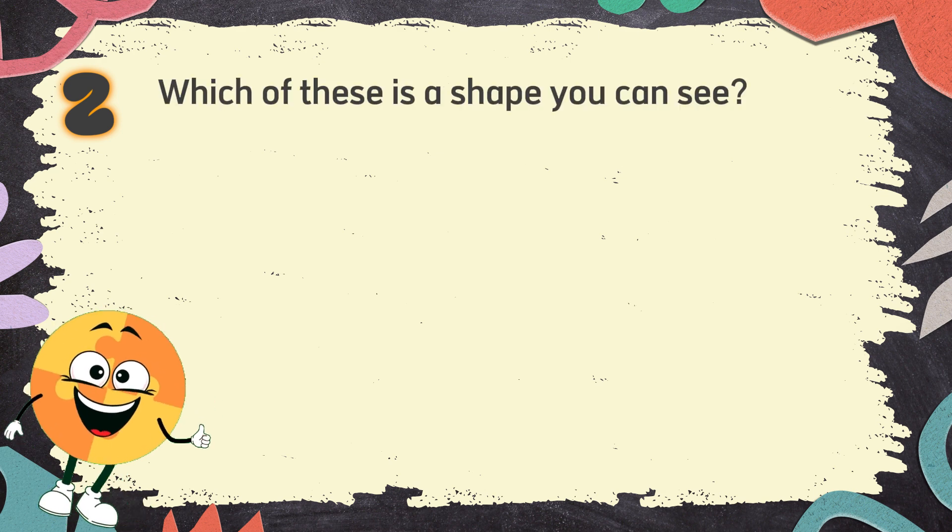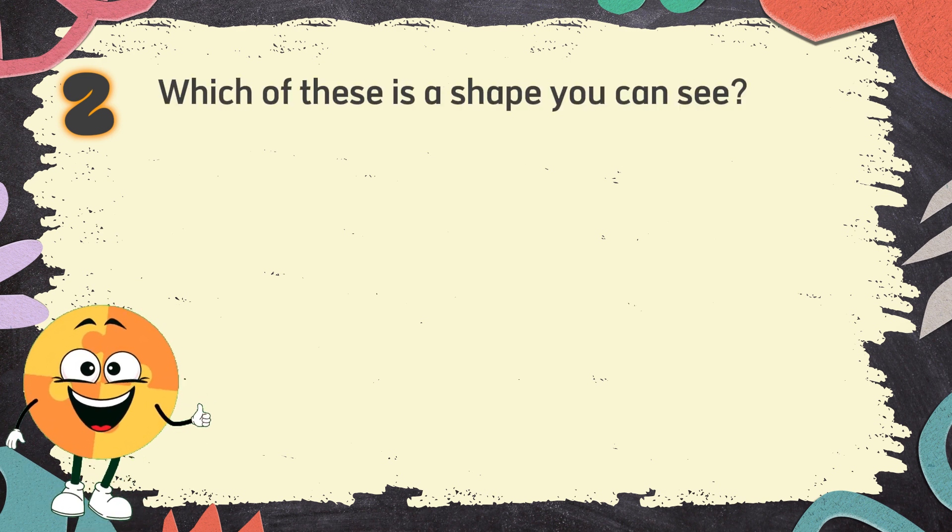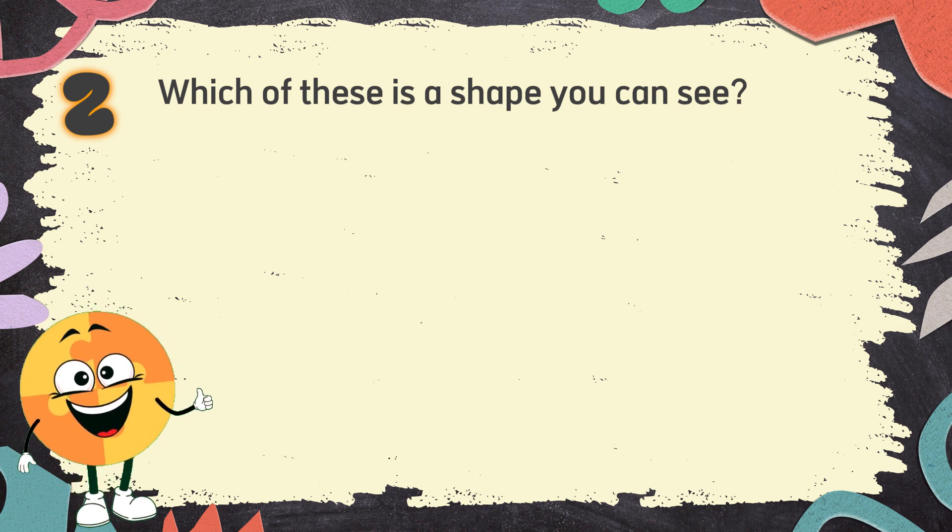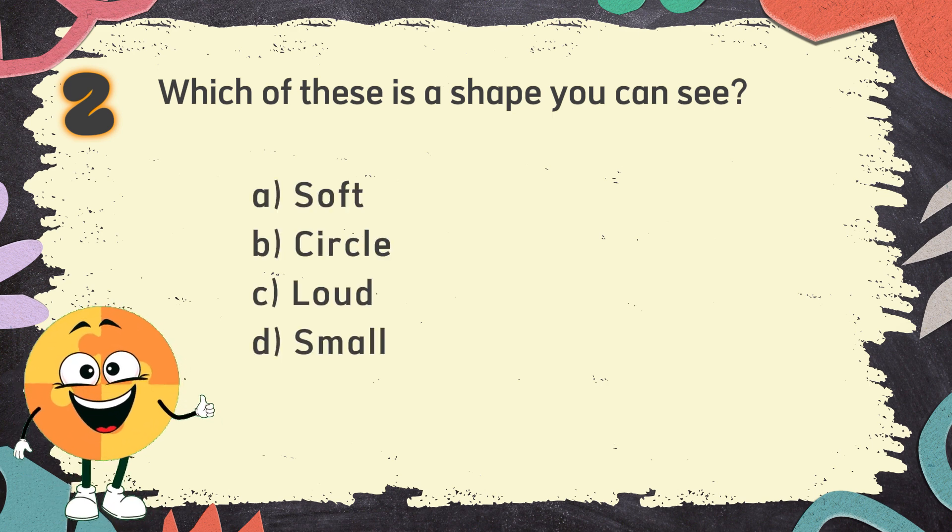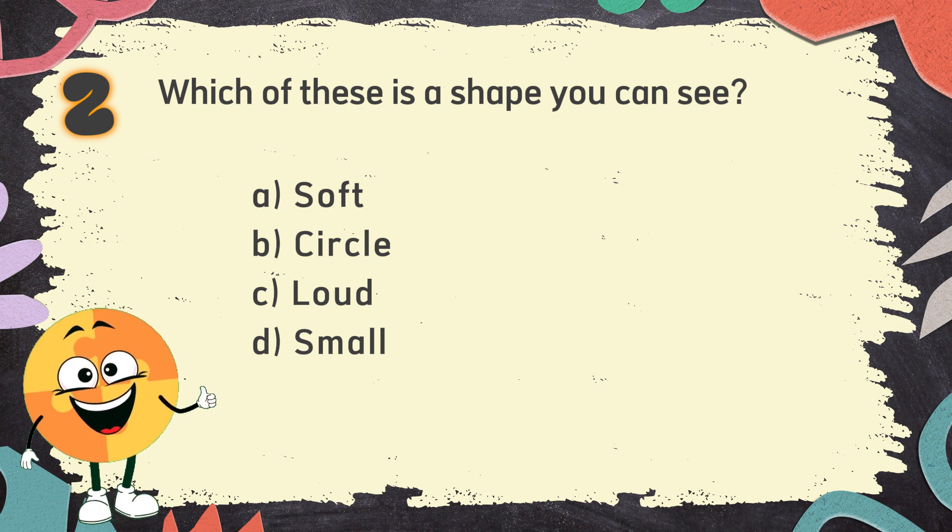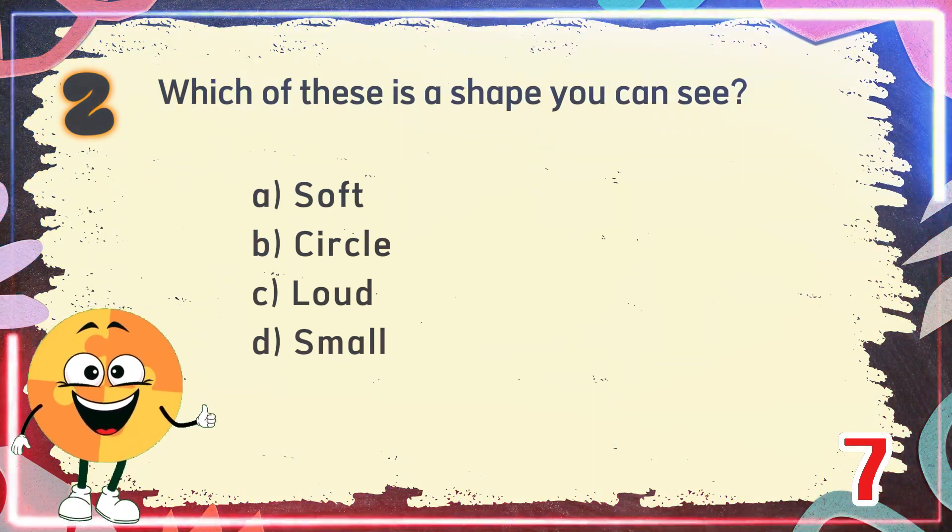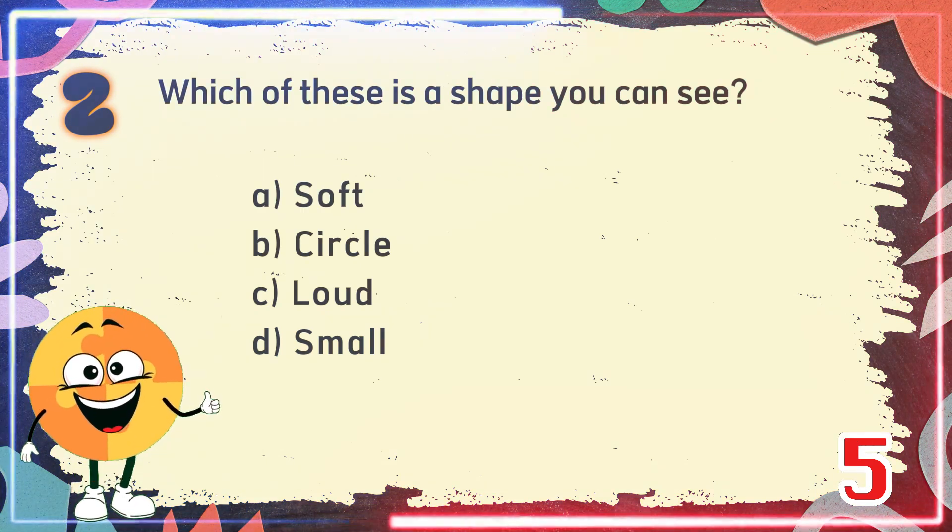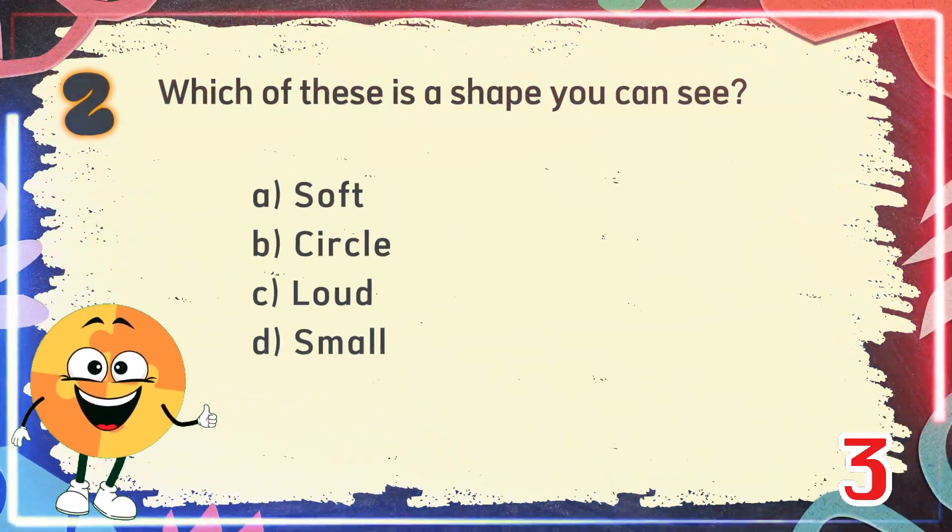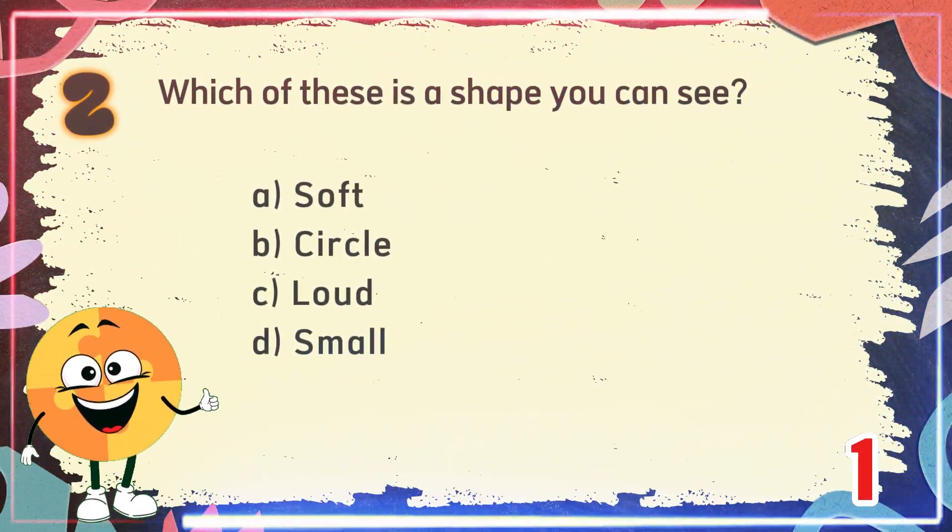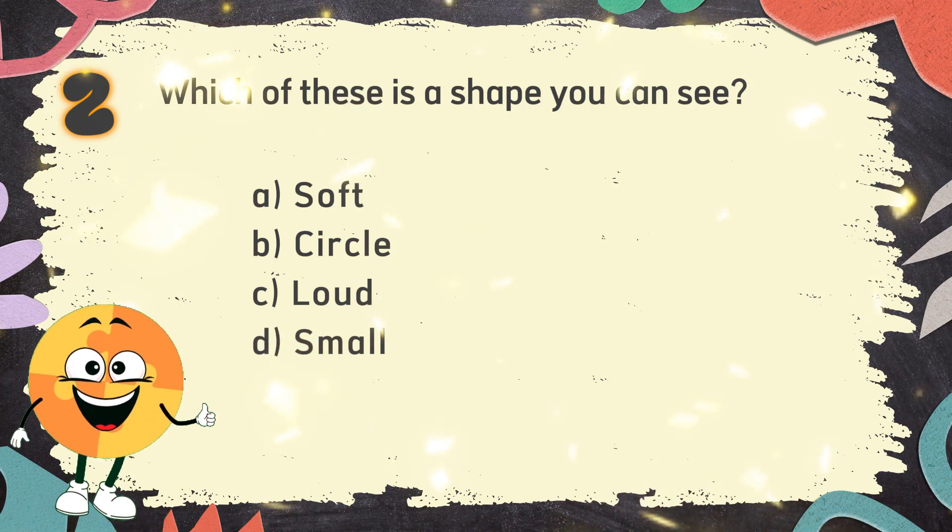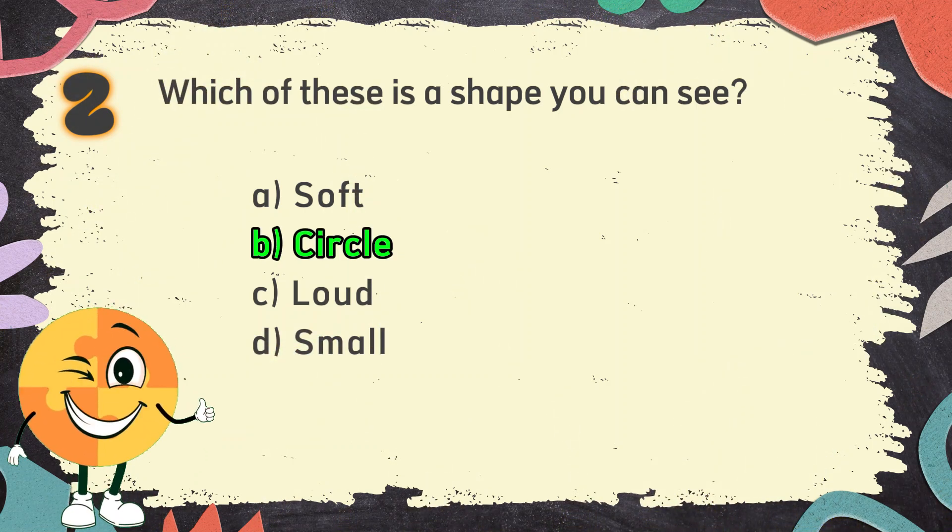Number 2. Which of these is a shape you can see? The choices are A. Soft, B. Circle, C. Loud, D. Small. The correct answer is B. Circle.